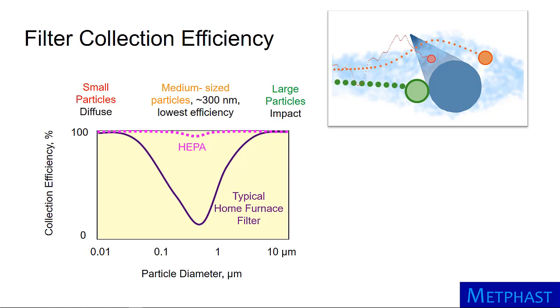High collection is achieved for very small particles, say 10 nanometers, due to diffusion, and for large particles, larger than 5 micrometers, due to impaction. However, the lowest collection efficiencies occur for particles in the middle size range, about 300 nanometers, because diffusion and impaction have the least effect on these sized particles.